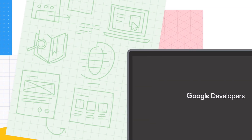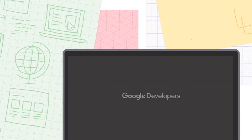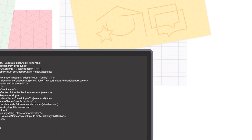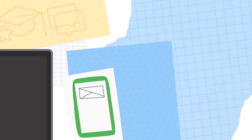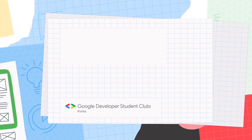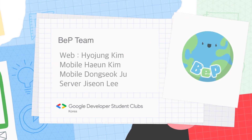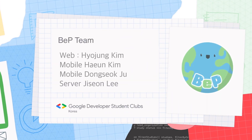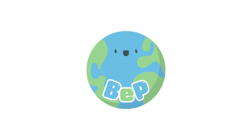Hi there, we are a web and app service that aims to raise awareness about environmental issues on earth. Our team is made up of Hyojin Kim for the web part, Hun Kim and Dongsob Joo for the mobile part, and Jishun Lee for the server part.